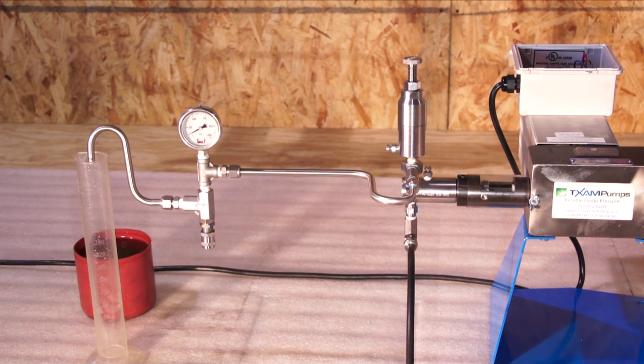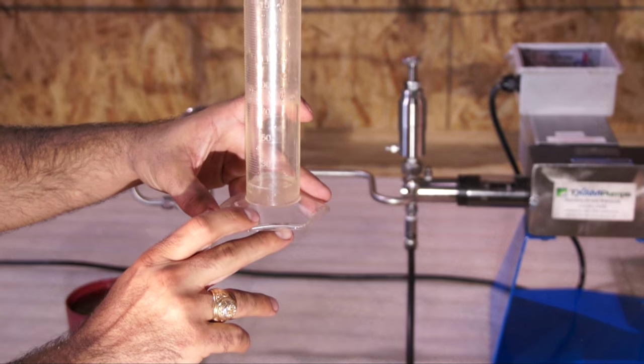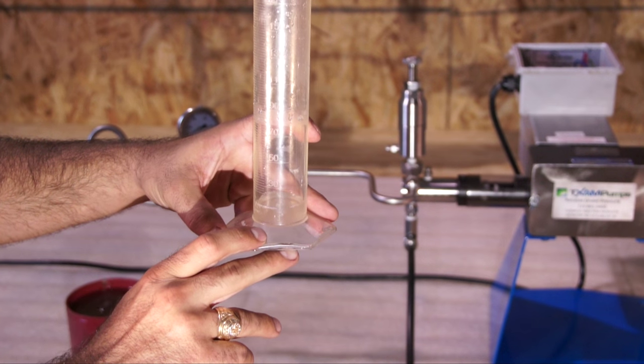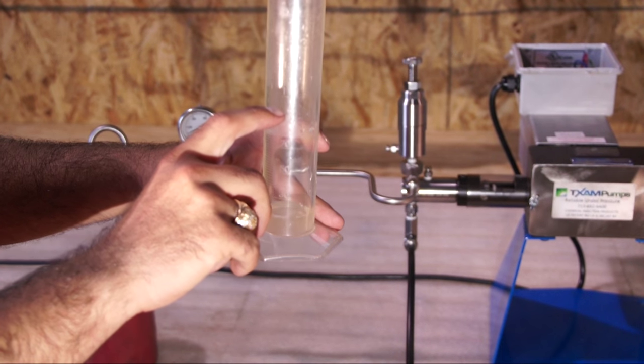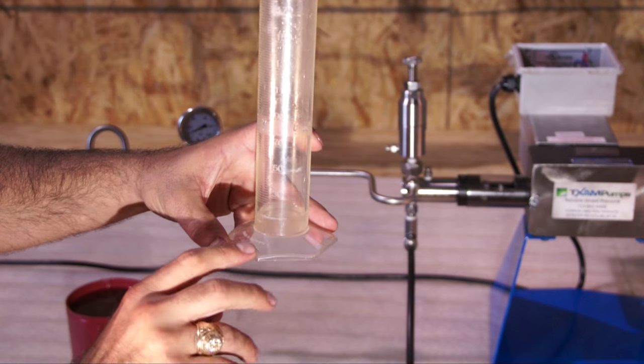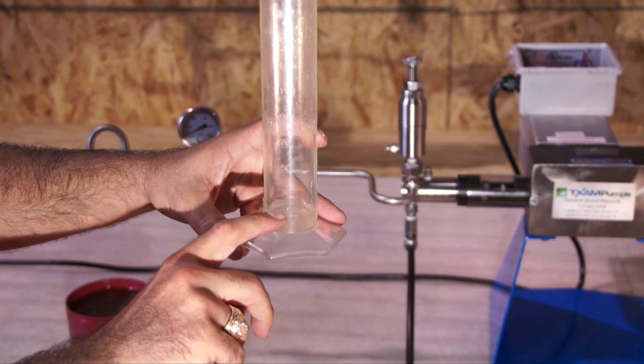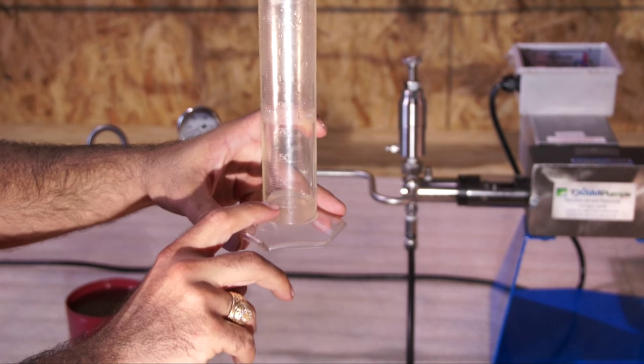Now I'm going to demonstrate the lowest possible setting for the flow control valve itself. Rather than 95 to 100 milliliters per minute, we only receive 26 to 28 milliliters per minute.